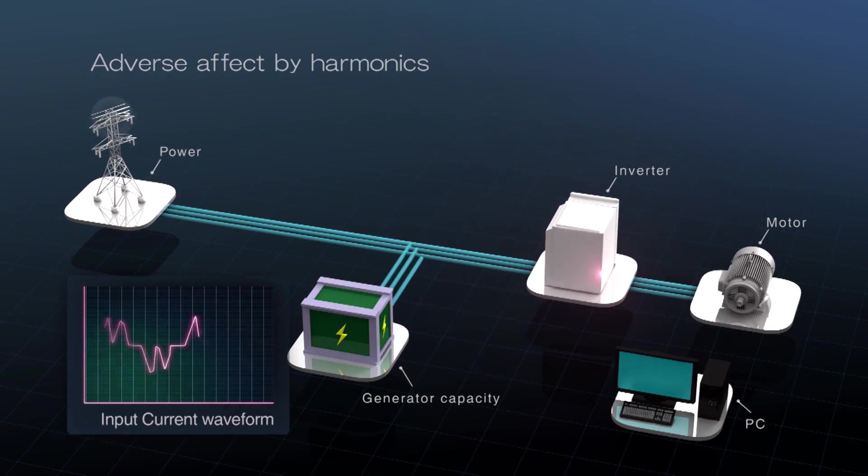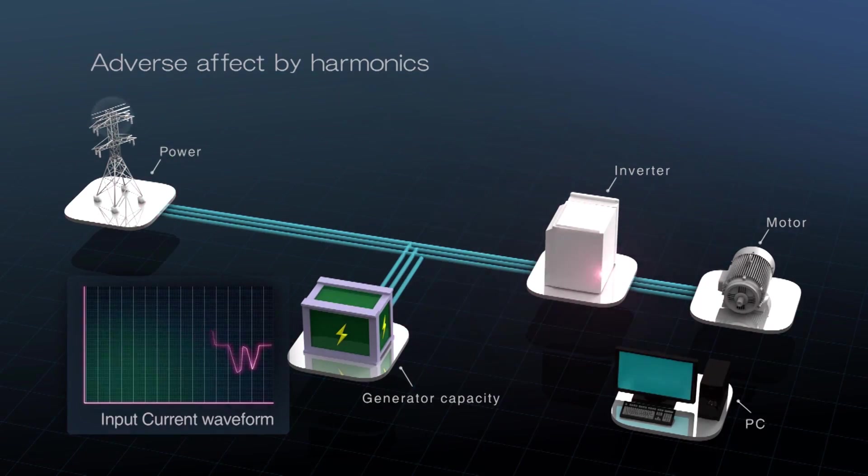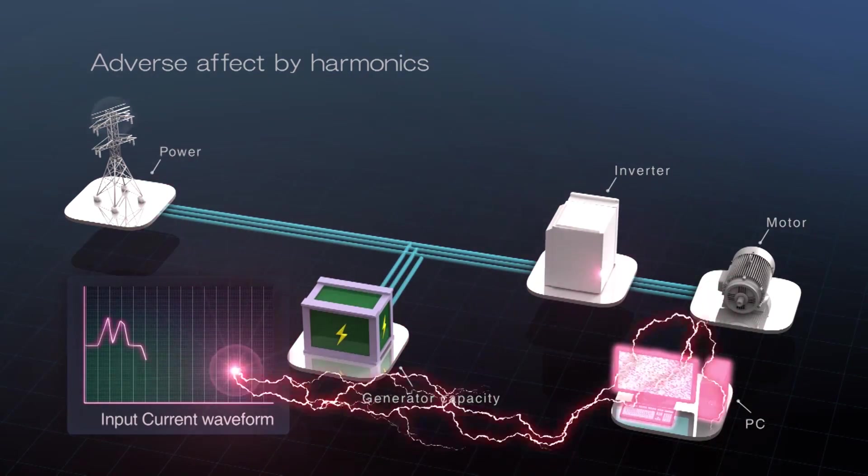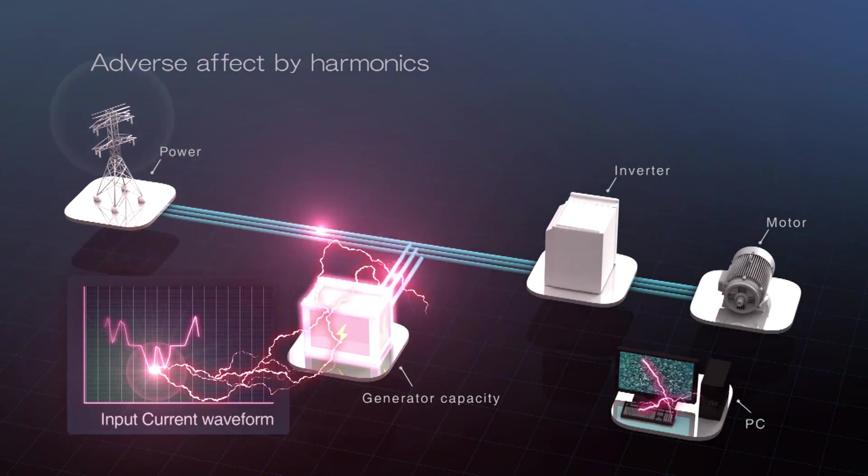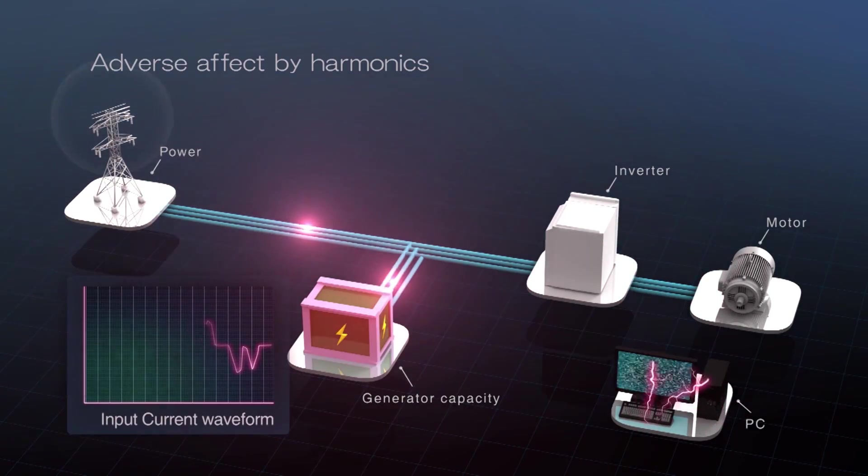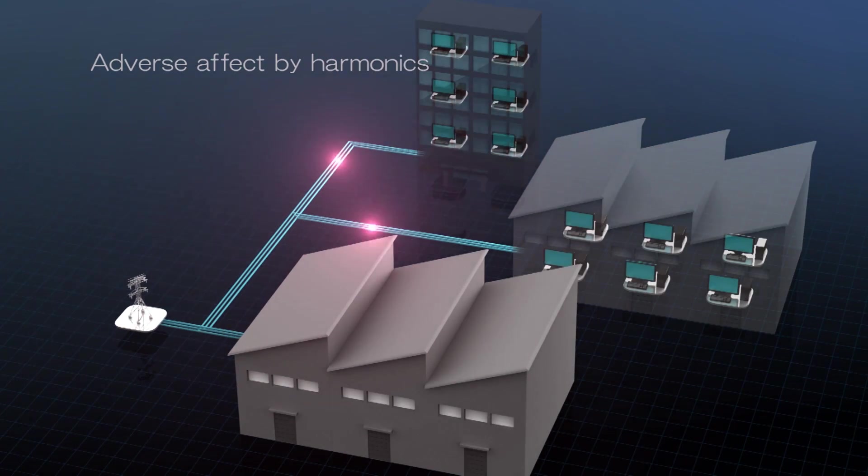When using conventional drives, input harmonics are typical, but other equipment such as precision instruments, power source generators, and even equipment in surrounding buildings can be negatively affected.